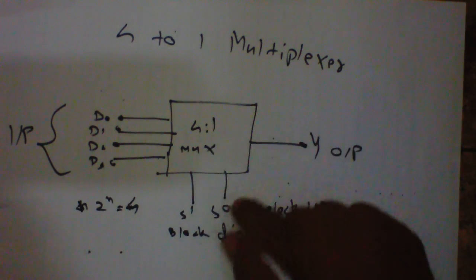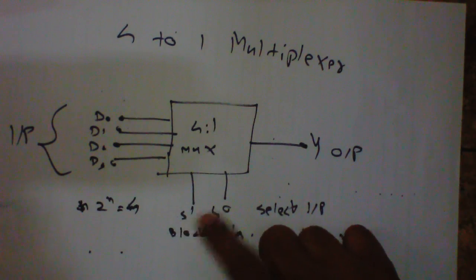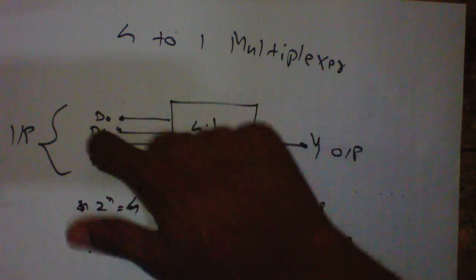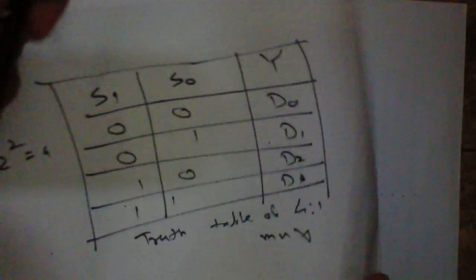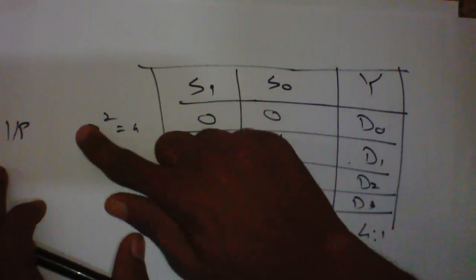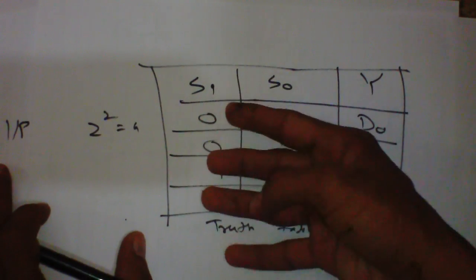So the truth table for 4-to-1 input will be inputs will be for S0 and S1, because in multiplexer we design truth table according to select inputs, not given inputs. So this is the truth table. We have two select inputs, so formula will be 2 raised to 2, which will be 4 combinations.